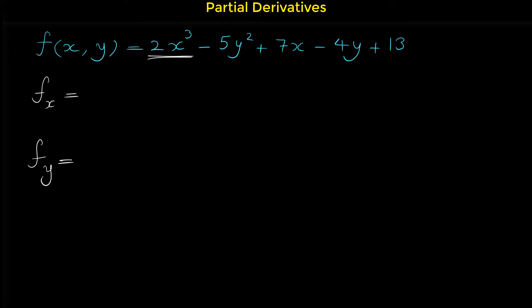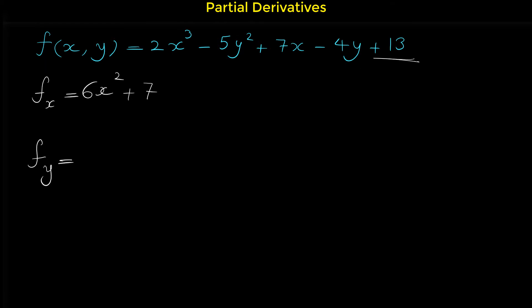The derivative of 2x³ is 6x². The derivative of negative 5y² is 0 because there is no x in that term. The derivative of 7x is 7. The derivative of negative 4y is 0, and the derivative of the constant 13 is also 0.